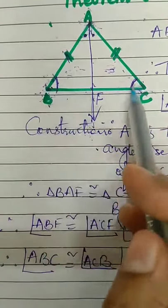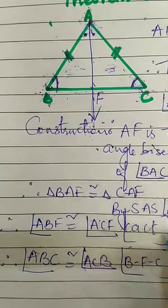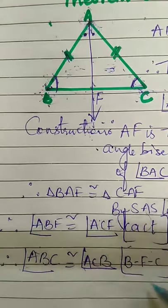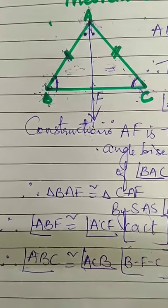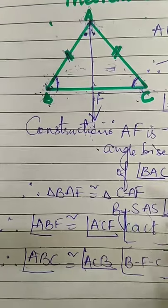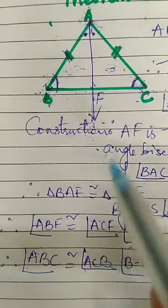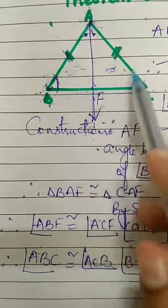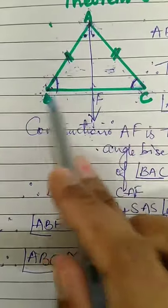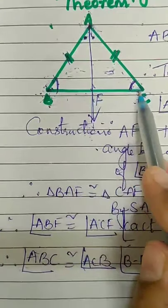We wanted to prove these two angles are congruent, and we got it by SAS test of congruence and by taking CACT. So, simple. You have to remember the property: if two sides are congruent, then the angles opposite to them will be congruent.